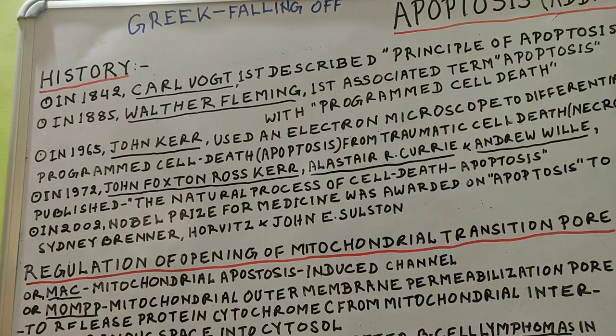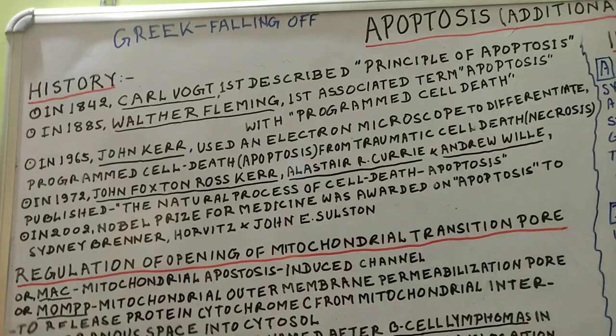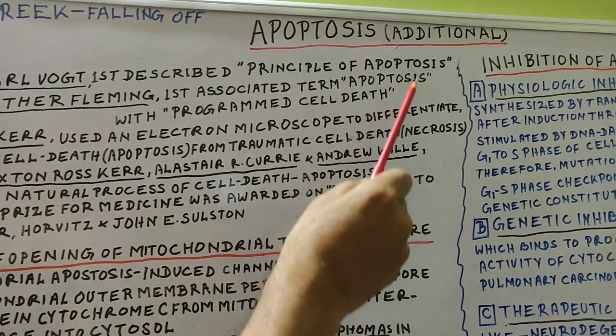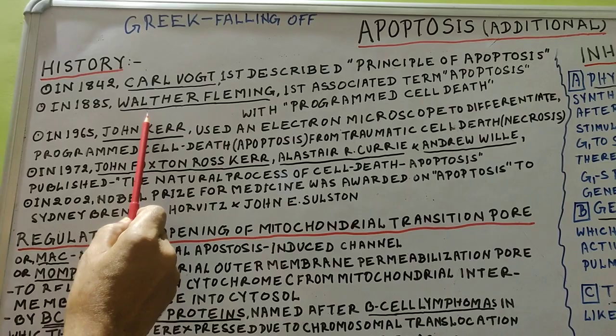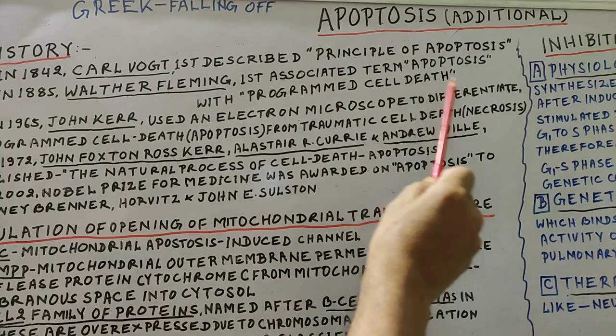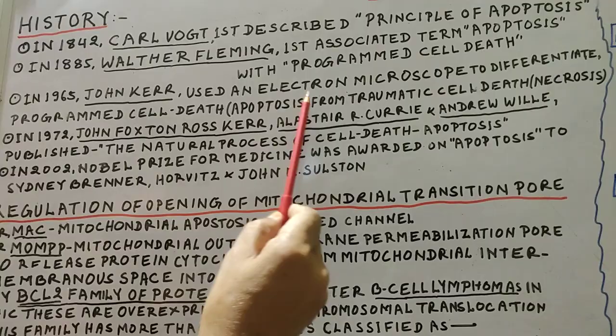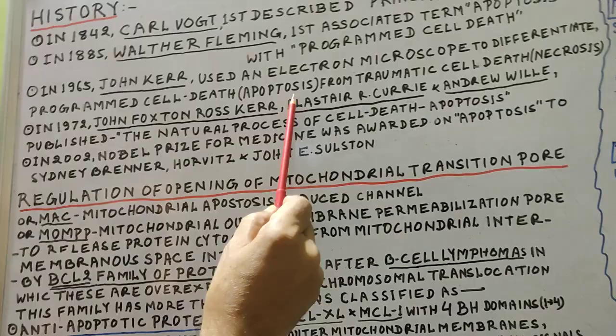Now we shall discuss the history of apoptosis. In the year 1842, Karl Vogt first described the principle of apoptosis, while in 1885 Walter Fleming first associated the term apoptosis with programmed cell death. In 1965, John Kerr used an electron microscope to differentiate programmed cell death — apoptosis — from traumatic cell death, that is necrosis.